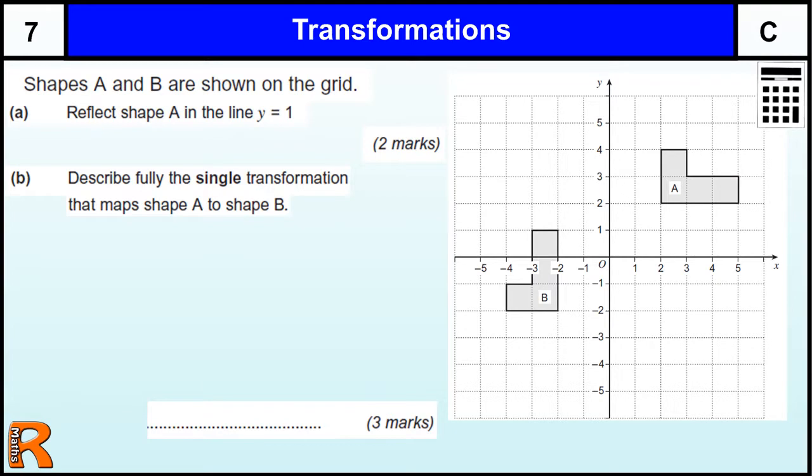Transformation question, grade C transformations. So we are looking at reflecting shape A in the line y equals 1. The line y equals 1 is this line here. All the y coordinates along this line are equal to 1. So we are reflecting on that line there. That is our y equals 1 line.